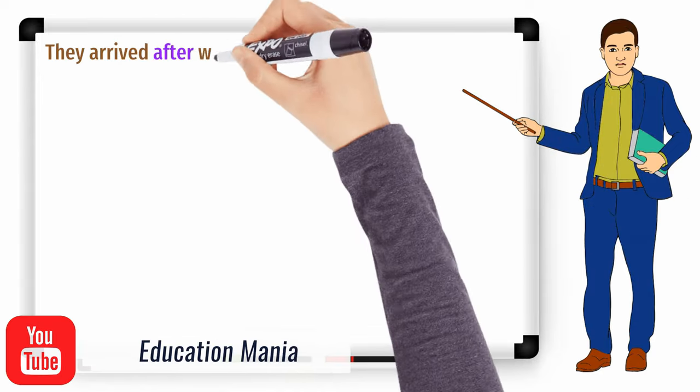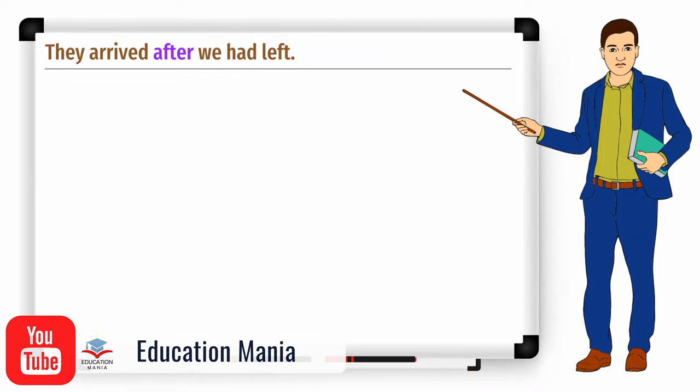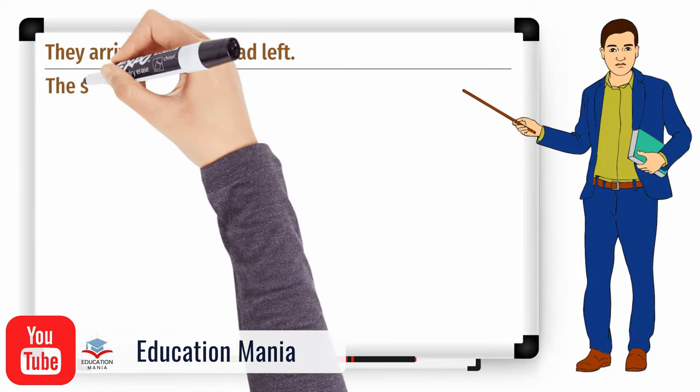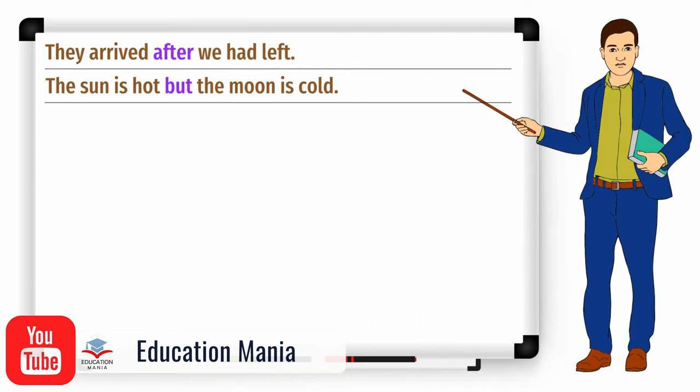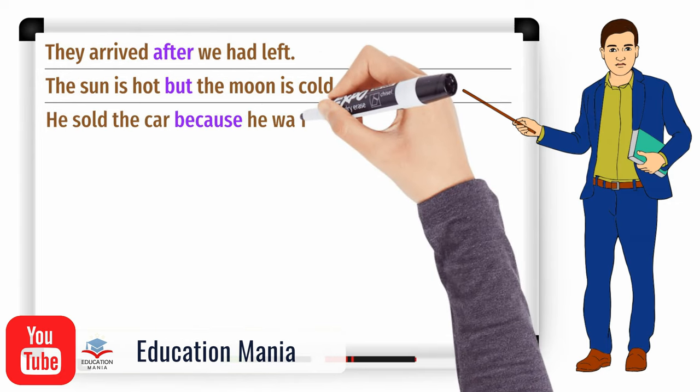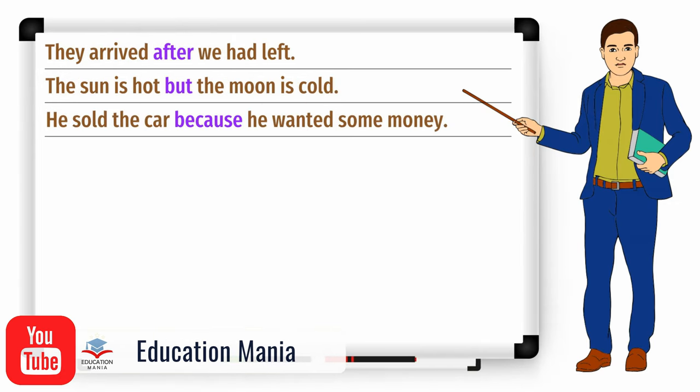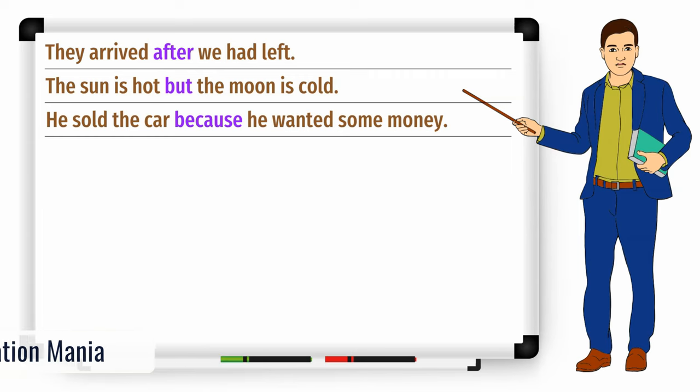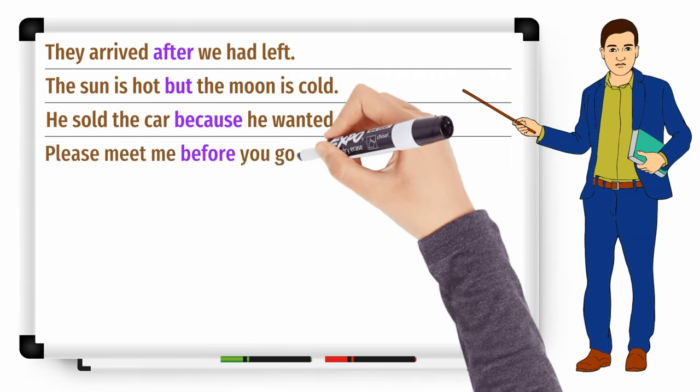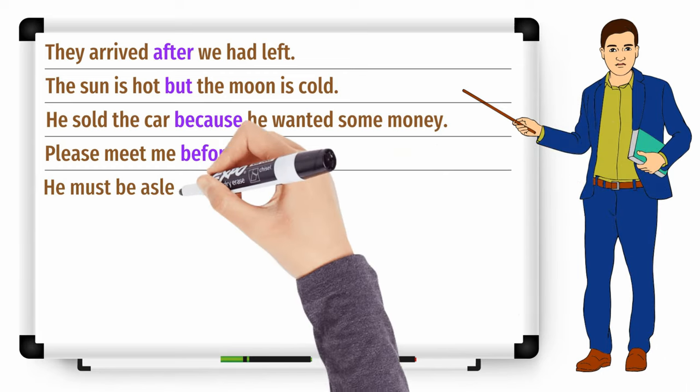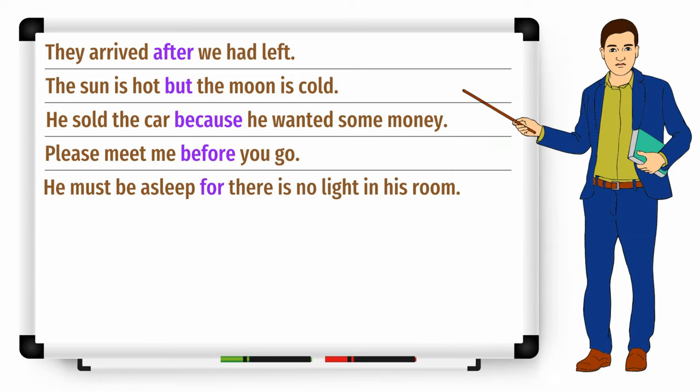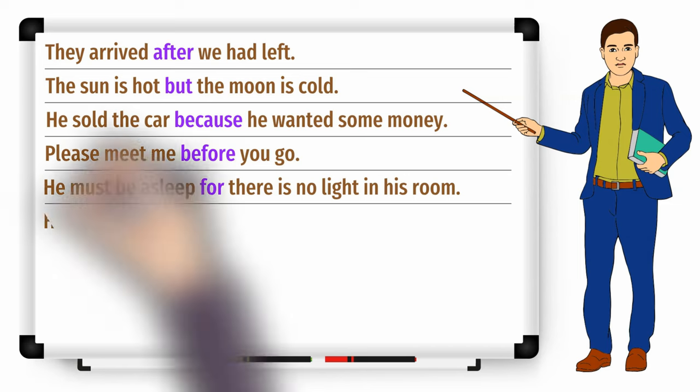They arrived after we had left. The sun is hot, but the moon is cold. He sold the car because he wanted some money. Please meet me before you go. He must be asleep, for there is no light in his room.